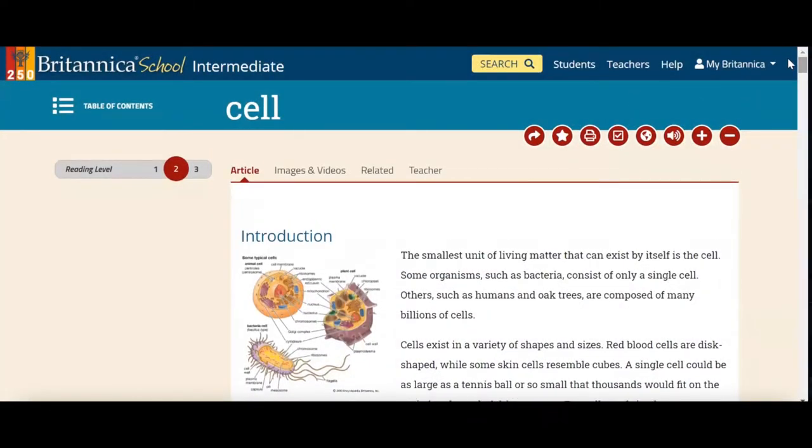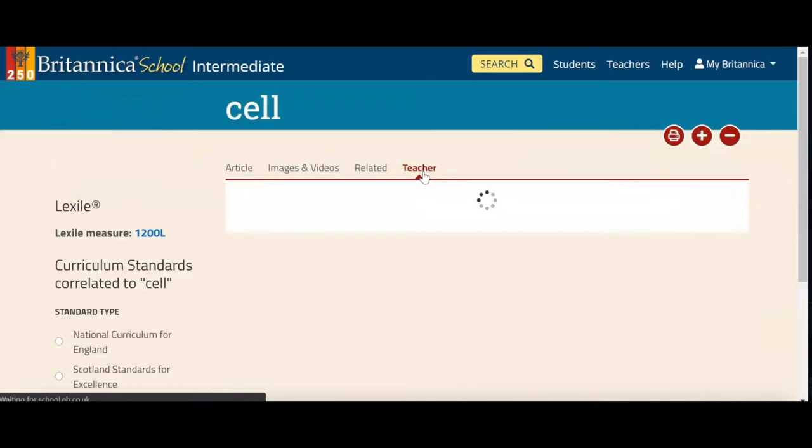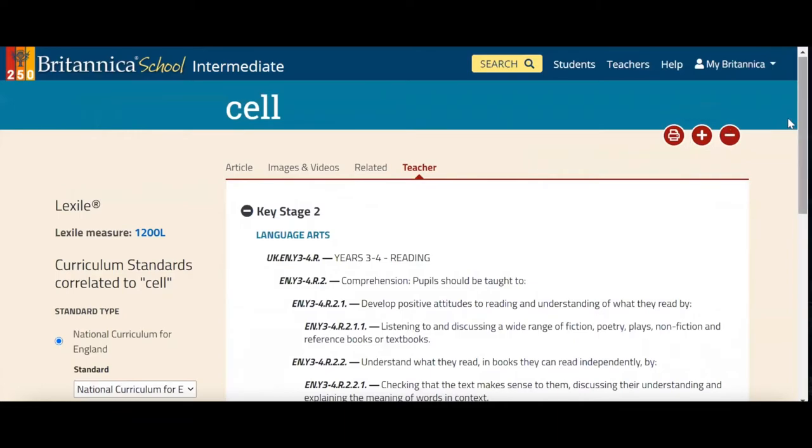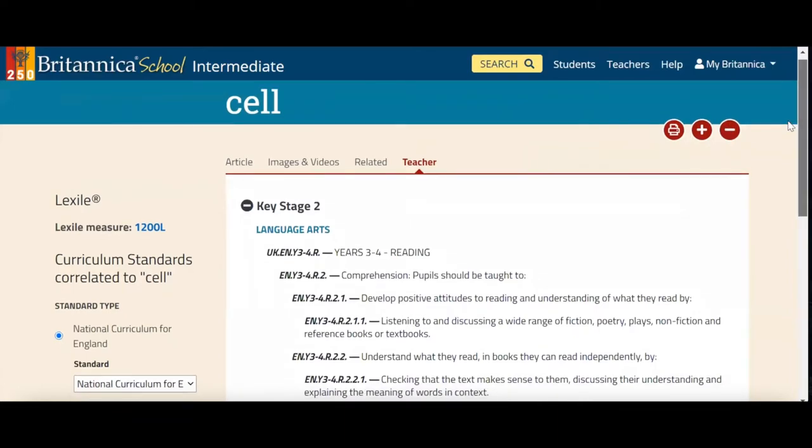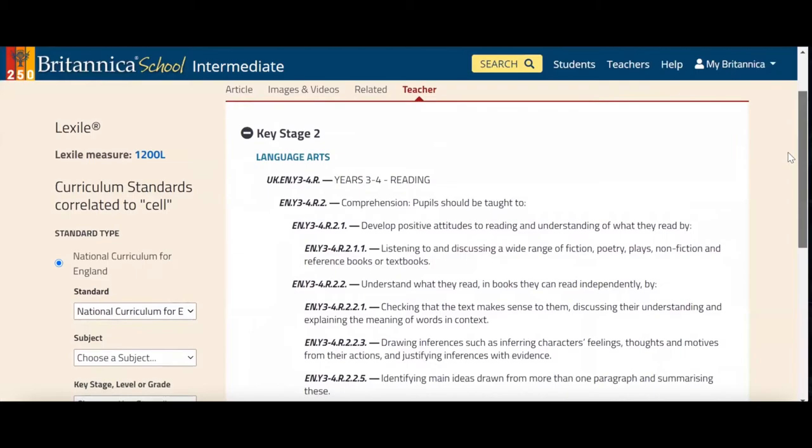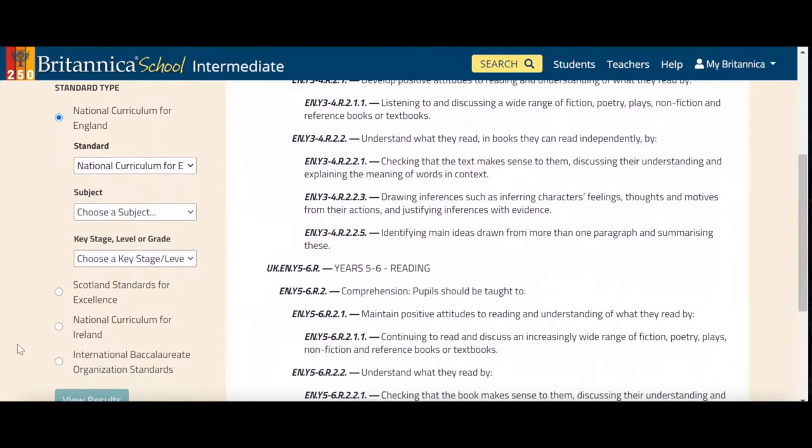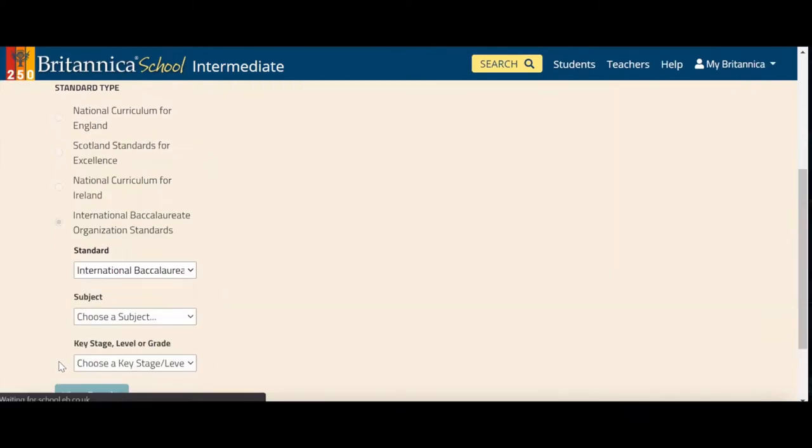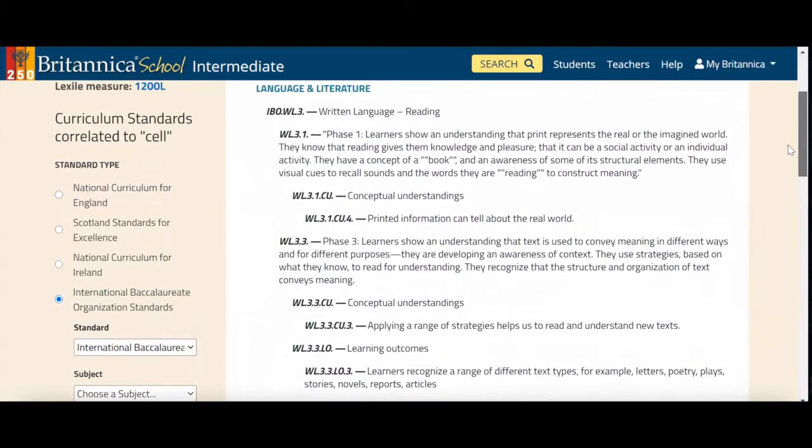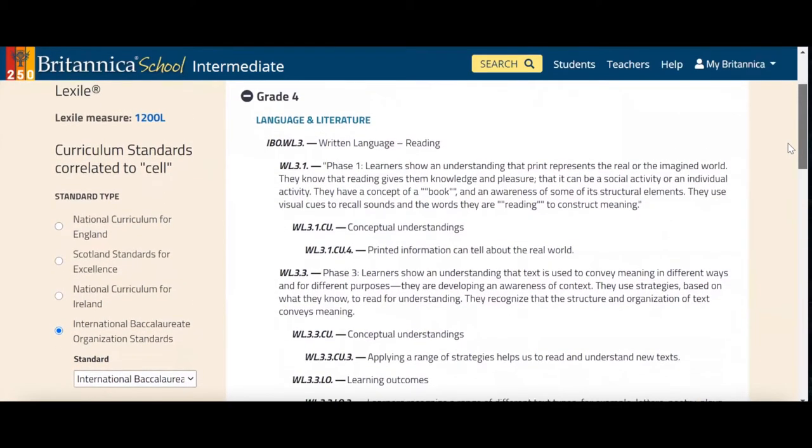As a teacher, what you want to be using is this teachers tab here. This is where you can find how does Britannica achieve the curriculum standards of the IB for MYP and for DP. So you click on this teachers tab, and what you'll see now is four different curriculum standards. But for you as an IB teacher, you'd want to scroll down, and then you can click on International Baccalaureate. And you will see now strand by strand exactly what's being achieved in this one particular article.